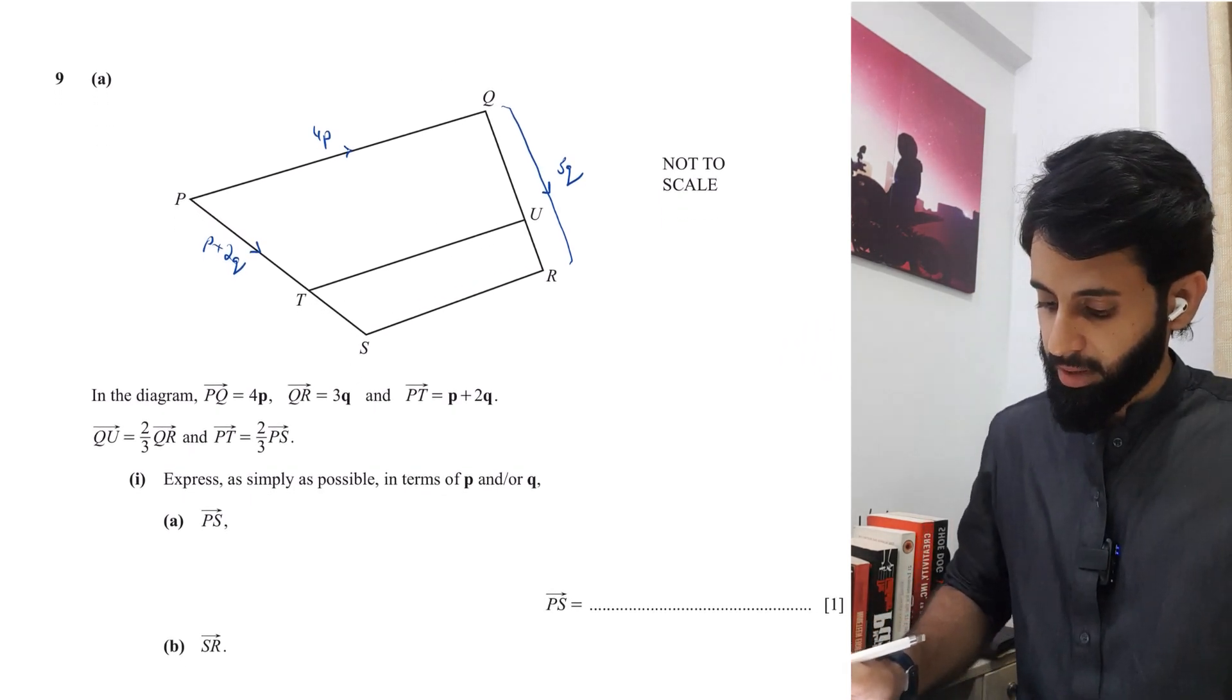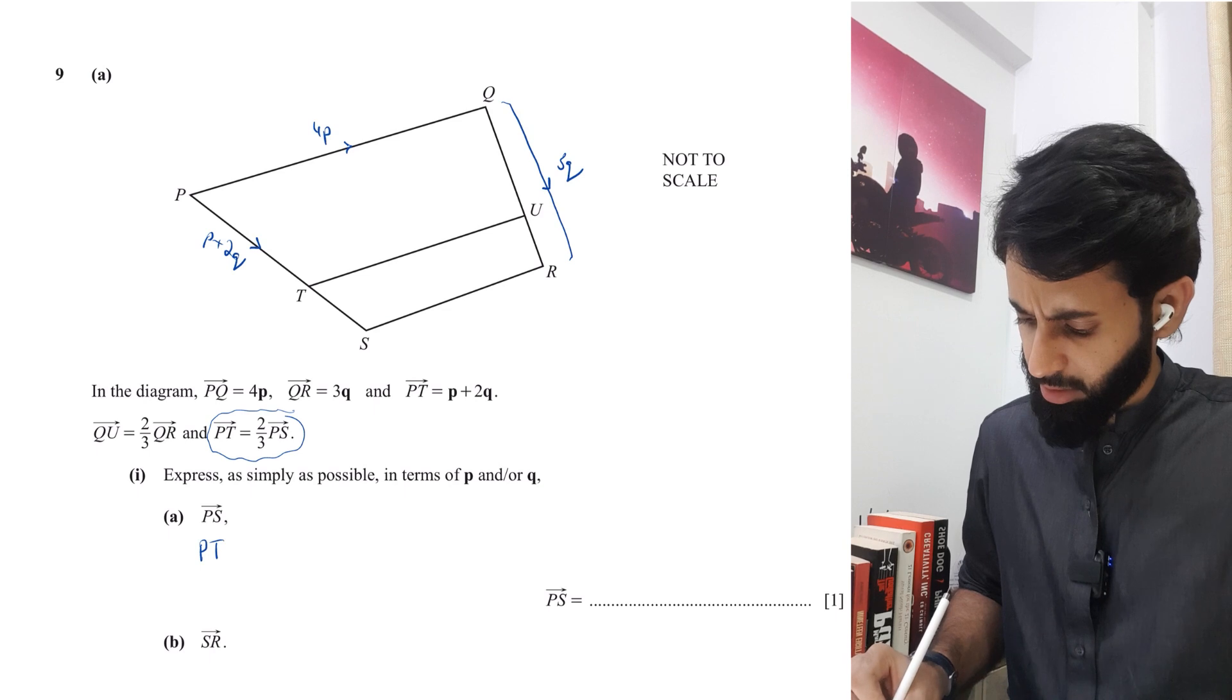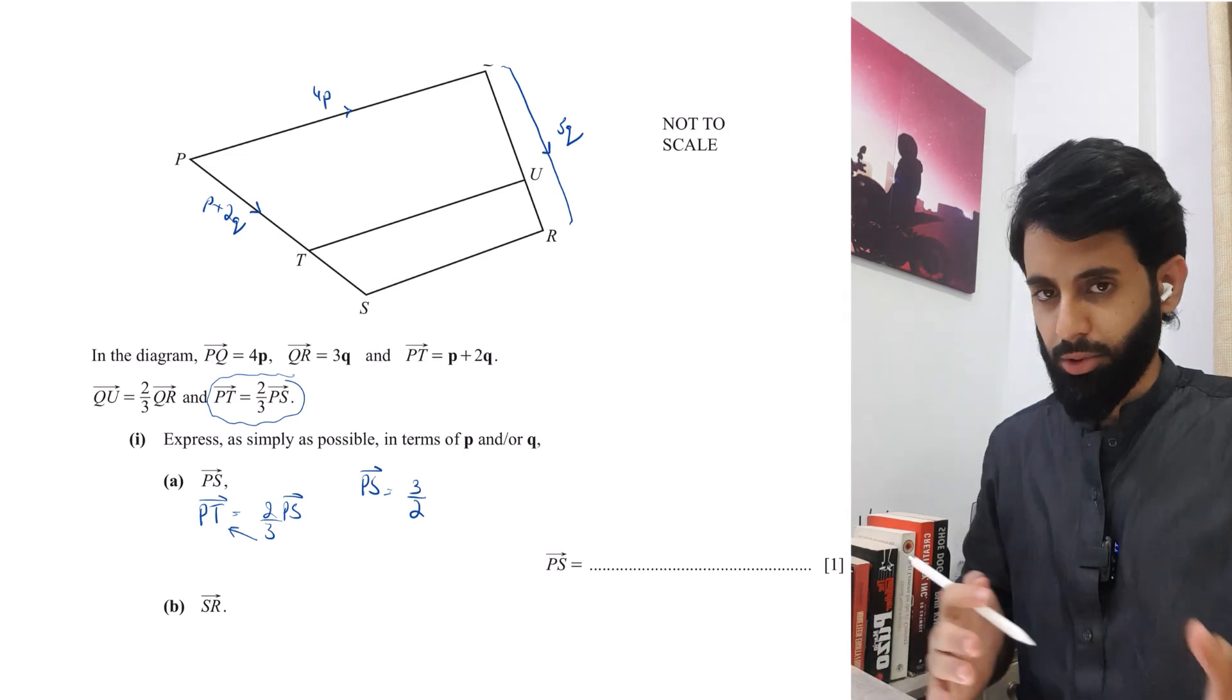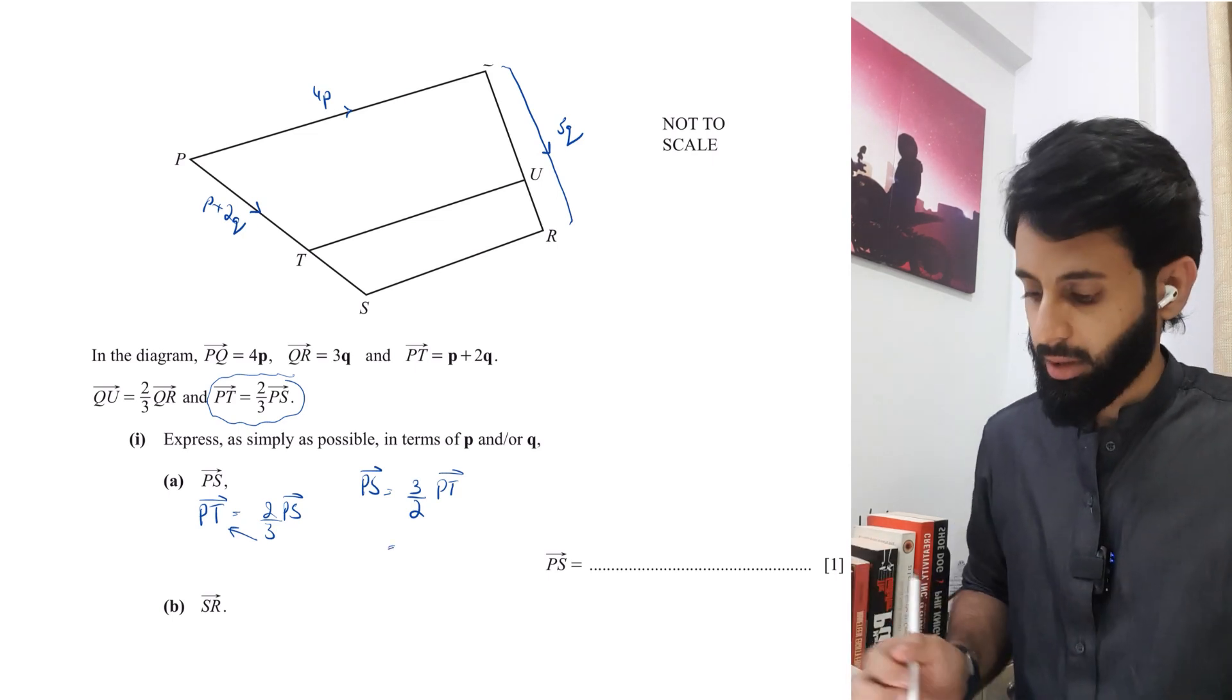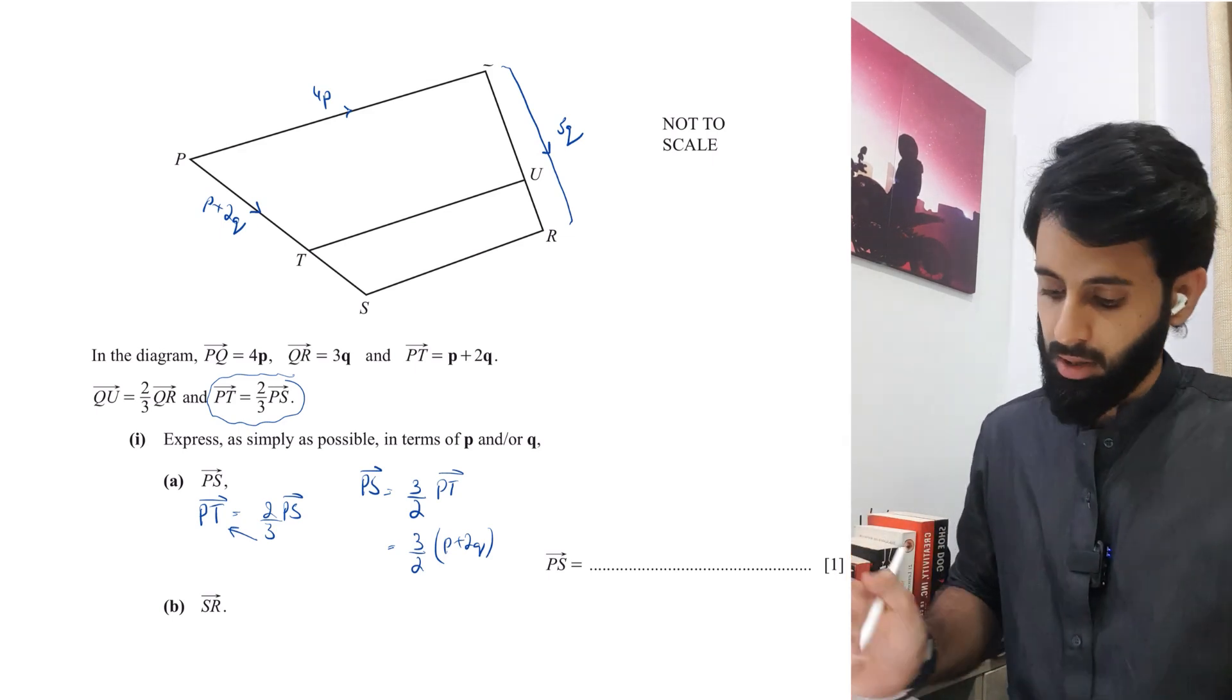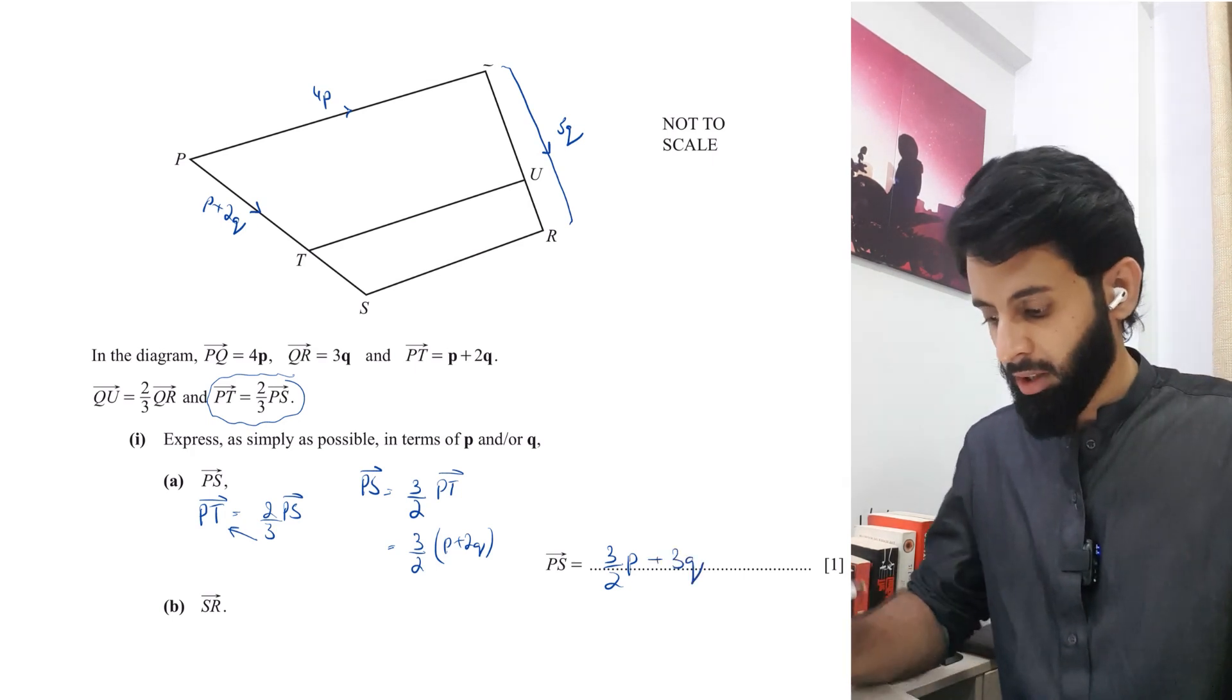It says express as simply as possible in terms of P and or Q, PS. The question told me that PT is equals to 2 third of PS. That means if I make PS the subject, so PS is going to be equal to 3 over 2 times PT. So 3 upon 2 times P plus 2Q. The question does say to express it as simply as possible. So this becomes 3 upon 2P plus 3Q.